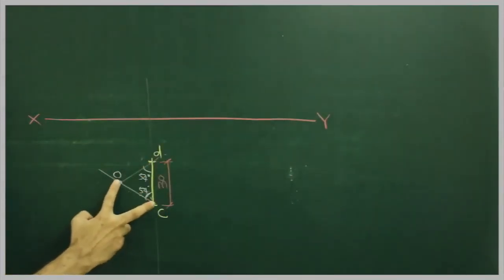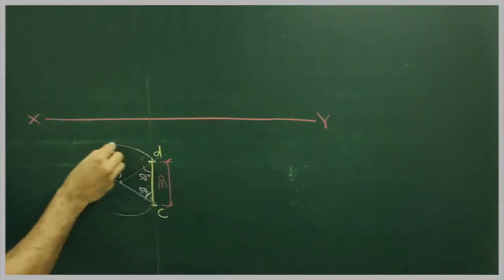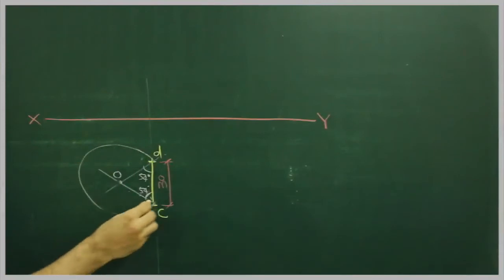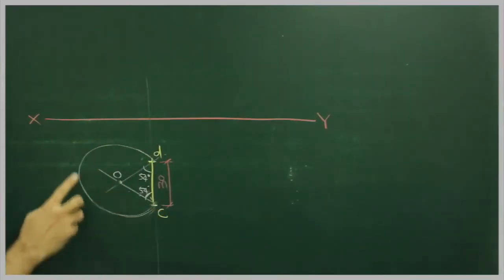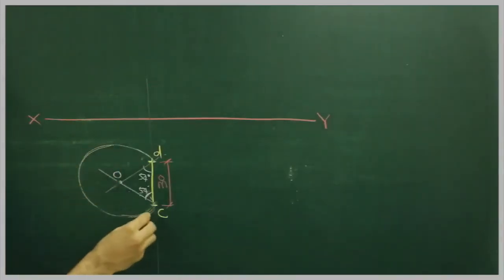Then we take O to C and we will draw one circle. We take O to C and we will draw one circle.